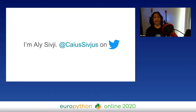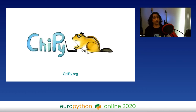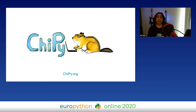I want to start by thanking the organizers for giving me this opportunity. My name is Ali Sivjay — you can find me on Twitter at kaiasivjas. I've tweeted a link to these slides. I'm one of the organizers of the Chicago Python Users Group, which we call ChiPy. ChiPy is one of the largest Python communities in the world, with around 6,000 members, and every month when we were meeting in person we held four to six events.